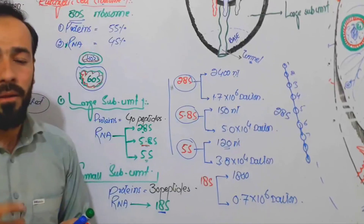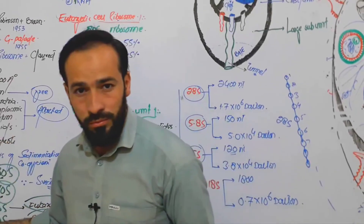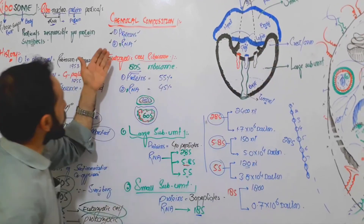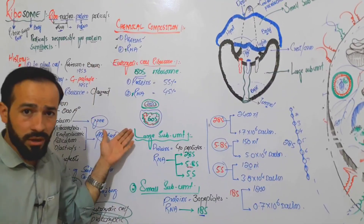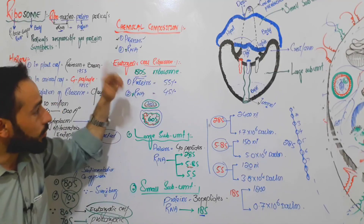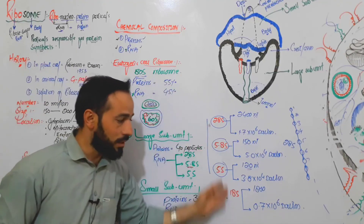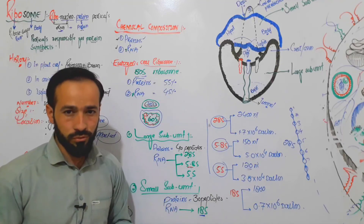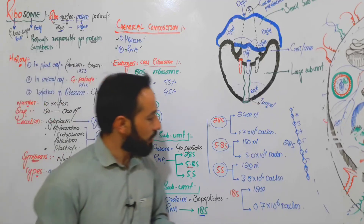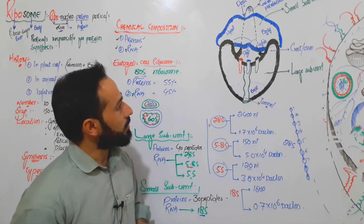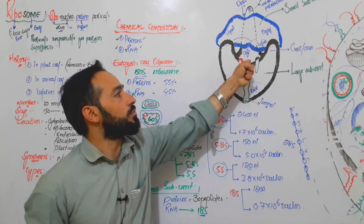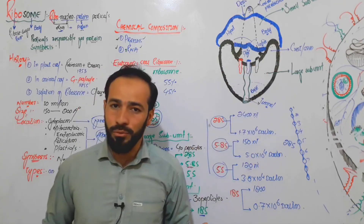So we talked about what a ribosome is, what the different parts of a ribosome are, and then we discussed the chemical composition of both the 70S ribosome and the 80S ribosome. In the next lecture I will discuss the functions of the ribosome — specifically how the ribosome is responsible for making proteins.